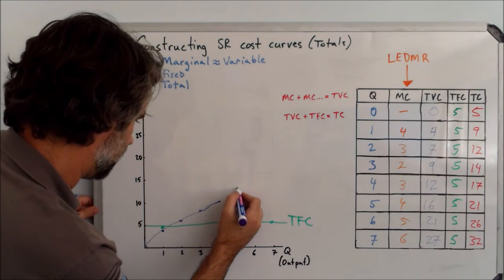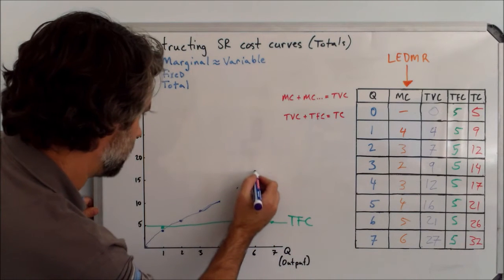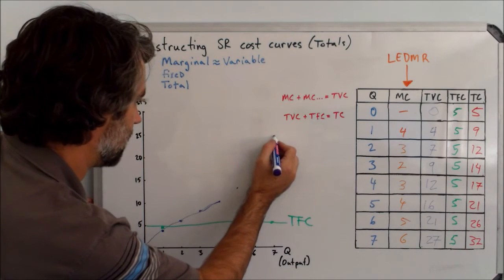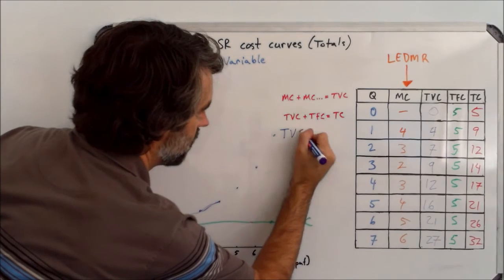From there, it goes up to 16, a little bit more steep, up to 21, a little bit more steep, and then up to 27. So this is total variable costs.